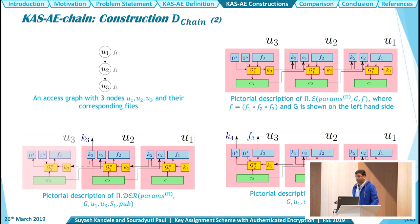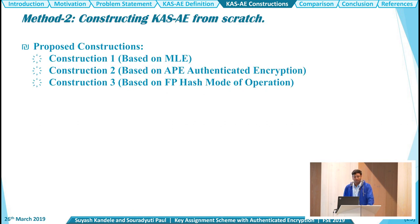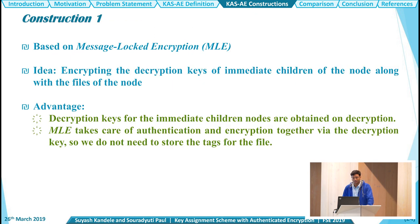Now we go to the second method, where we construct CAS-AE schemes from scratch, and we propose three constructions: Construction 1 based on MLE, Construction 2 based on APE, and Construction 3 based on FB hash mode of operation. Our first construction, based on MLE, uses the idea of encrypting the decryption keys of all immediate children of a node along with the file of that node. This offers the advantage that decryption keys for immediate children nodes are obtained on decryption, and MLE itself takes care of authentication and encryption together via the decryption key, so we do not need to store tags.